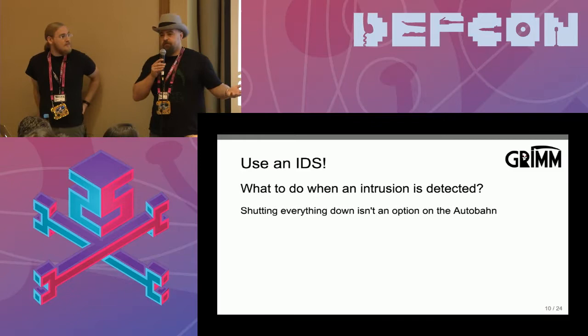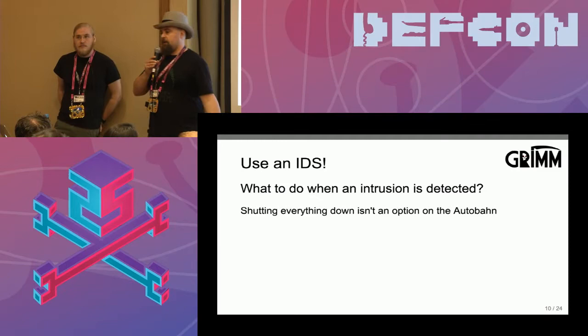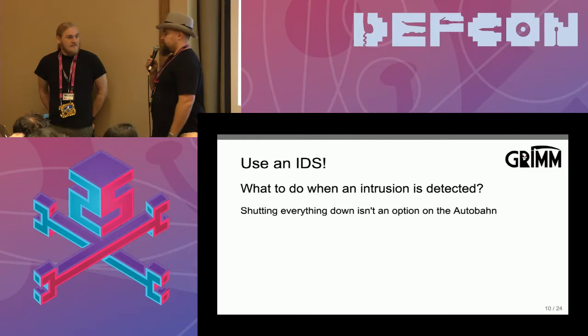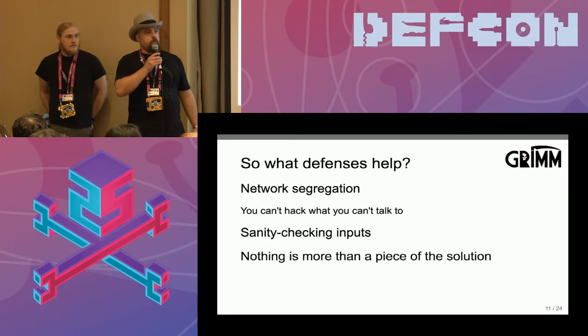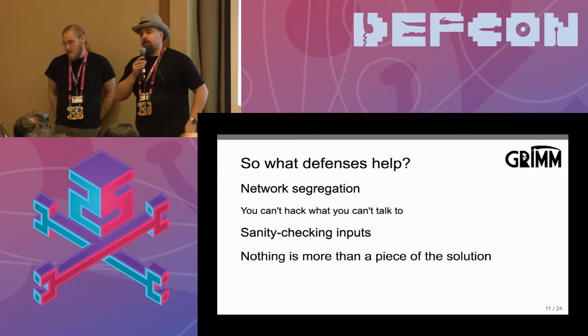What about intrusion detection systems — something smarter than a firewall that can say, hey, we're trying to bleed the brakes and we're going 70 miles an hour down the interstate, this probably shouldn't be happening. While I'm not denying that could be part of the solution, what do you do? You can't just disable the ABS module because you kind of need that. You can't just pull over to the side of the road because that might not be safe at the moment. So you have this IDS that alerts you, which is great, but what do you do about that alert? It's like a check engine light — you're going to take it to the mechanic in three months and see what's up.